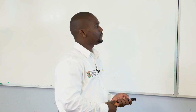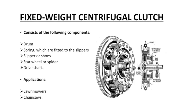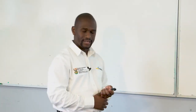Fixed weight centrifugal clutch components: a drum, a spring fitted to the slippers, slippers (also called shoes), star wheels or spiders, and a drive shaft. Application: used on lawn mowers and chain saws.